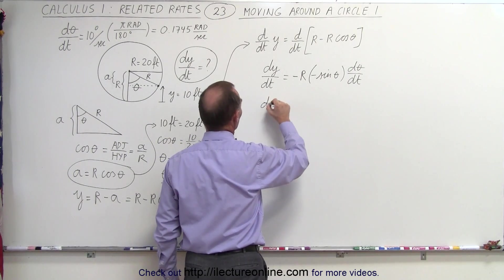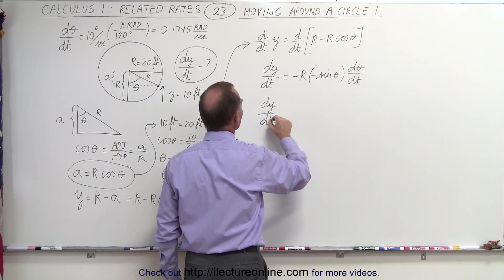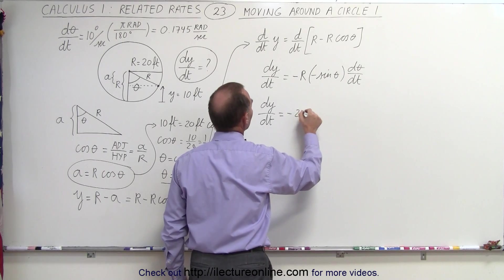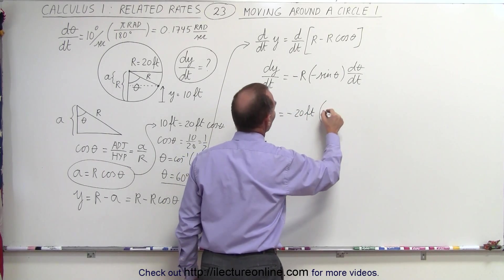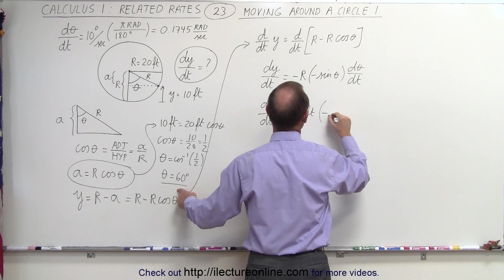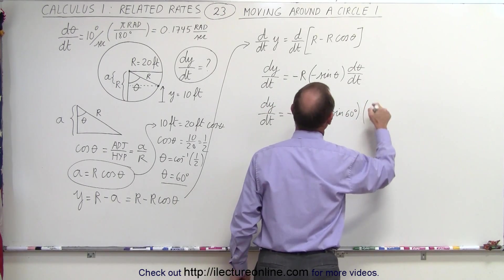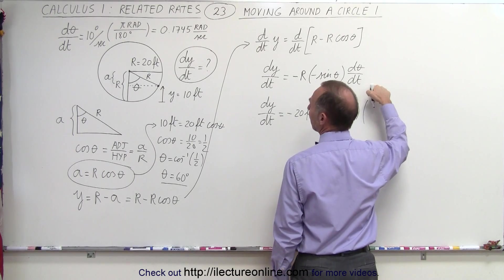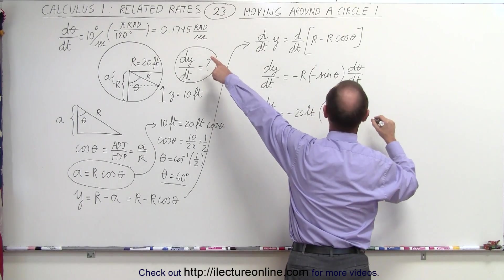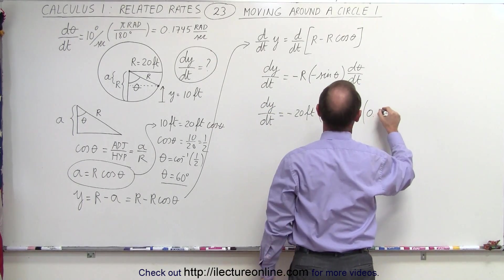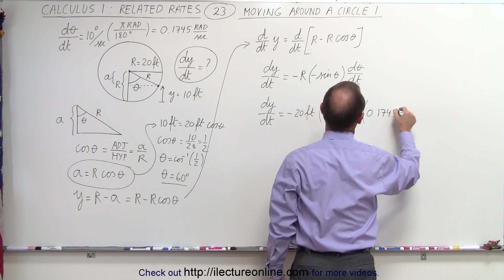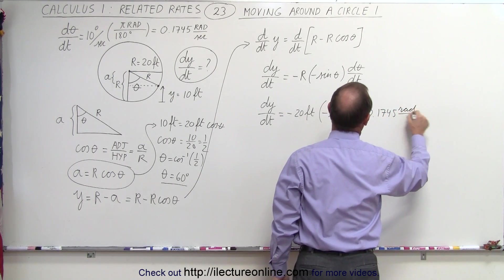The rate of change of y with respect to time is going to be minus 20 feet times minus the sine of 60 degrees times the rate of change of the angle with respect to time, which we found there to be 0.1745 radians per second.